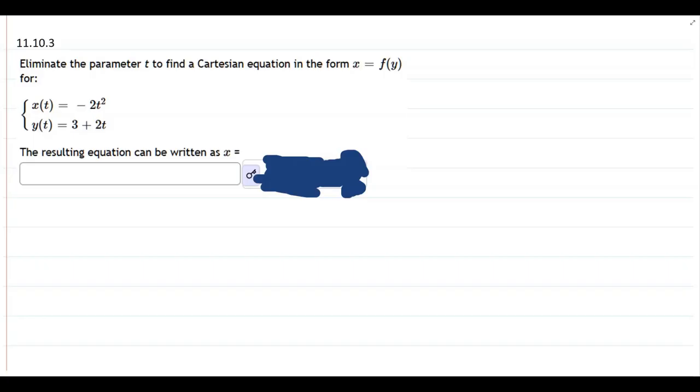This question, we have two parameterized equations, and there's three variables: x, y, and t. What we need to do is turn these two equations into a single equation with only x and y, so we need to eliminate t.